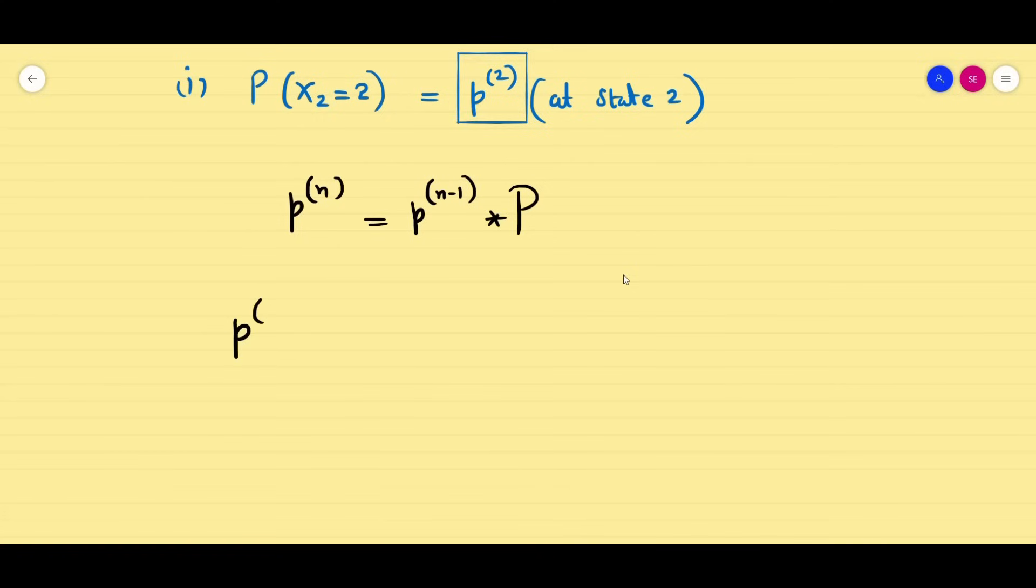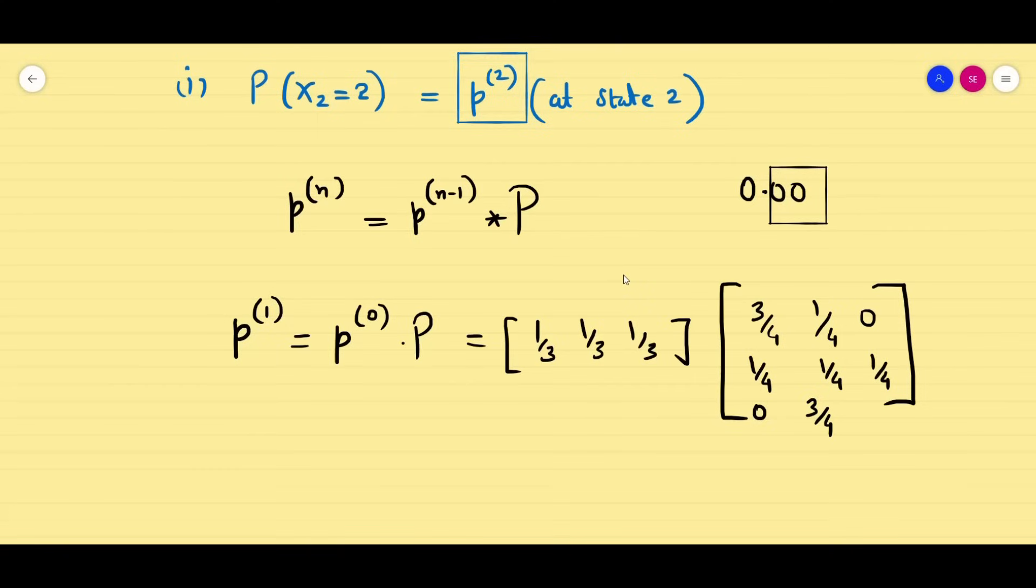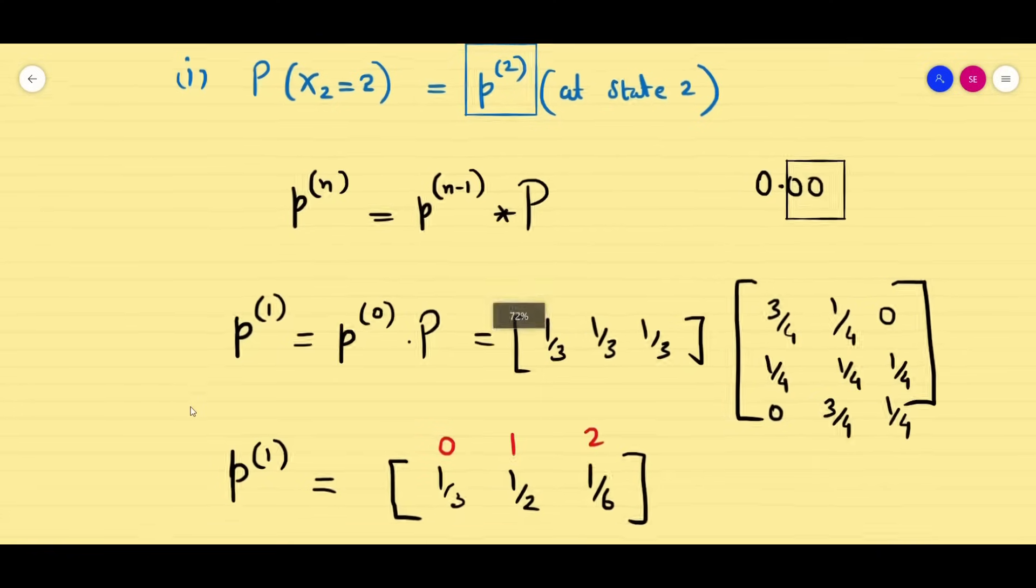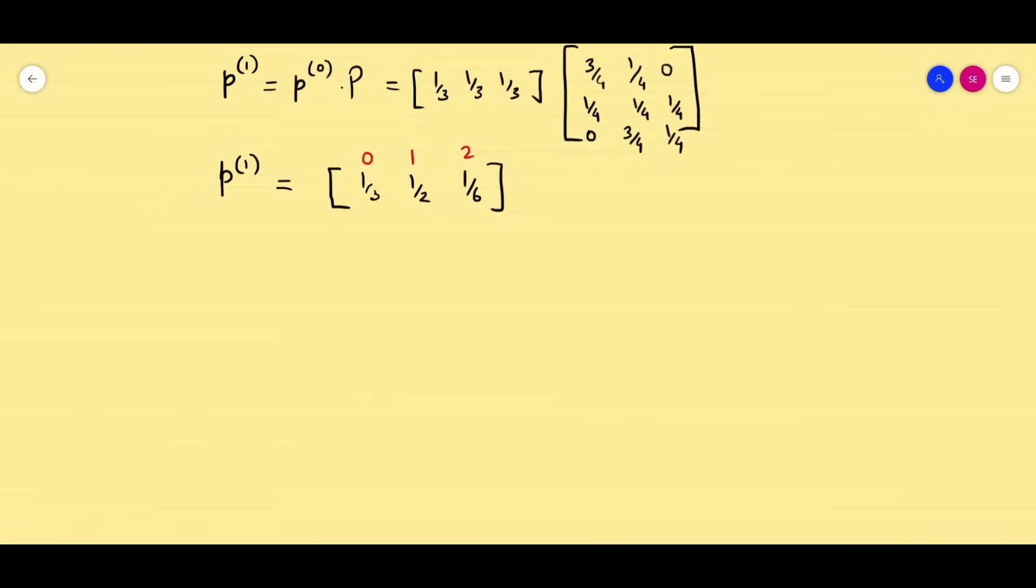Watch the calculator tricks video and you can find the answer. So now initially P0 is given, P1 = P0 times capital P. For your convenience, I am not multiplying; you can use your calculator and find the answer immediately. When you multiply with your calculator, you can write the decimals, two decimal places, not more than that, that is more than enough. So here I am just writing the fraction because I have solved the fraction in my notes. So I am multiplying, you will be getting the answer 1/3, 1/2, 1/6 for states 0, 1, and 2.